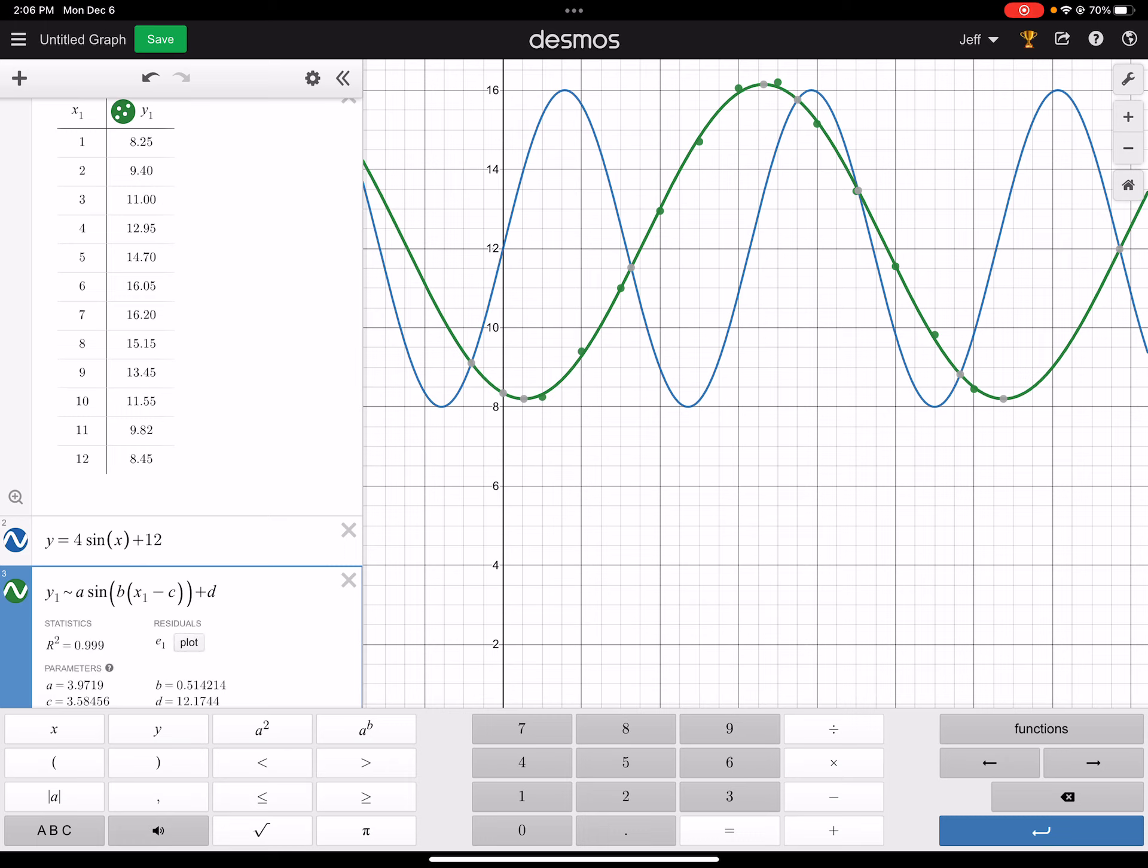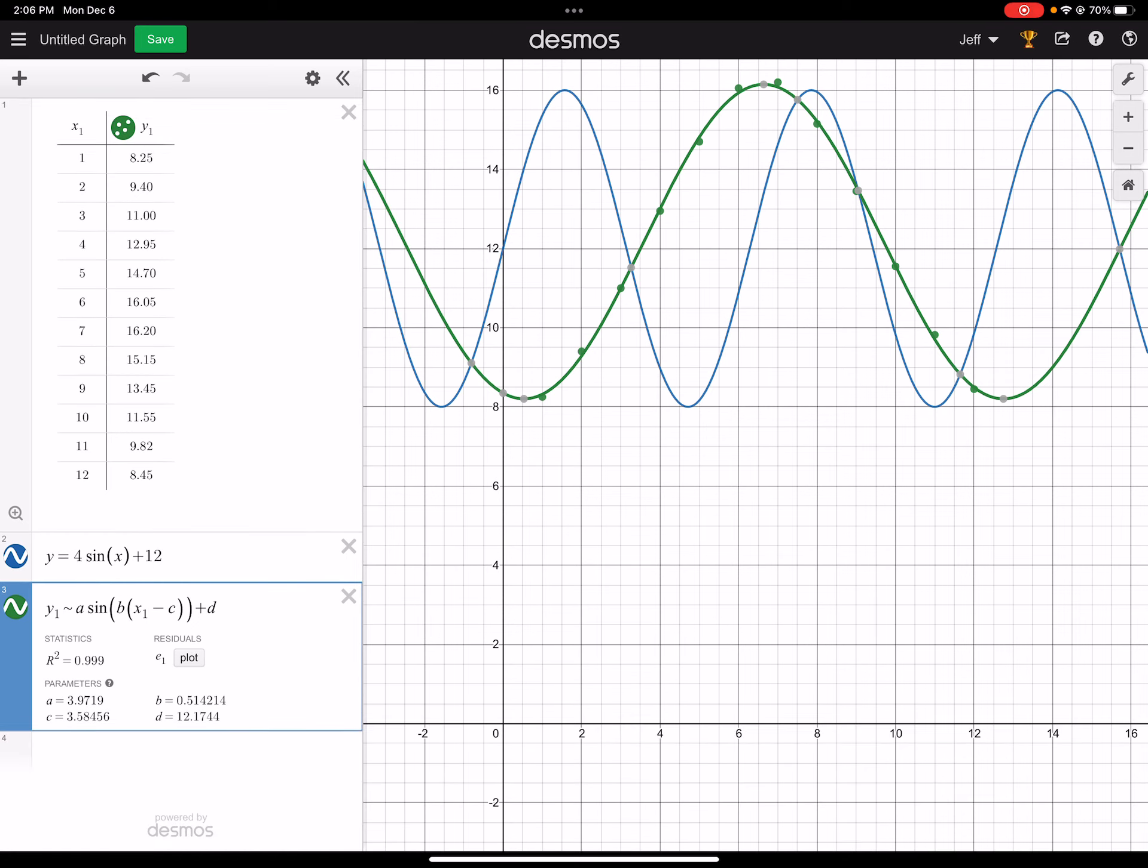Okay, so take a look at that green line. Let's get rid of the blue one. That was the guessing one. So you look at the green line, and that follows, it creates a function that follows those points fairly closely.